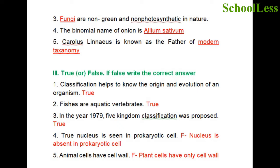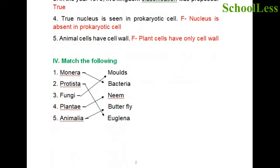Question 4: True nucleus is seen in prokaryotic cell. This is a false statement because nucleus is absent in prokaryotic cells. Question 5: Animal cells have a cell wall. This is also false because only plant cells have a cell wall; animal cells have no cell wall.